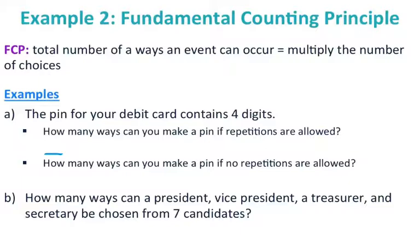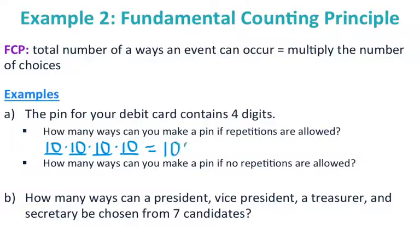It's 4 digits, so I have 4 spots. For my first number I have 10 digits to choose from. For the second number, I still have 10 digits because I can reuse numbers. So I have 10 times 10 times 10 times 10, and the fundamental counting principle says multiply them together. That gives 10,000 ways to make a PIN if repetitions are allowed.